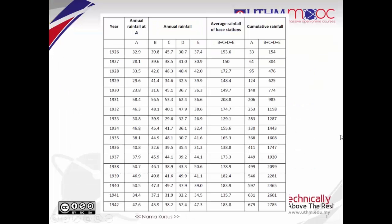There are a few steps that need to be taken to form the double mass curve and to compute the slopes. So let's see we have measured annual precipitation from year 1926 to 1942. And annual rainfall at station A is the test station. For annual rainfall at station B, C, D and E are the base stations.